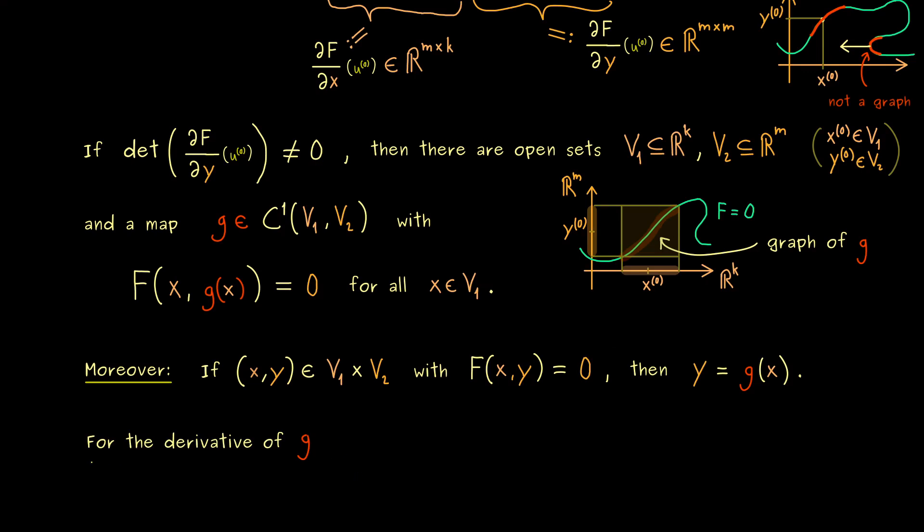And now as promised, for the derivative of g, we have the following formula. And in fact, this one is really helpful for calculations and important to remember. So we can calculate the Jacobian at the point x^0, and indeed even for a neighborhood around x^0.